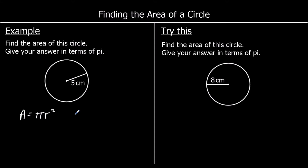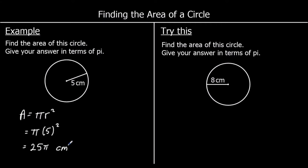In the first example, we've got a circle with a radius of 5 centimetres. So the area is going to be pi times 5 squared. 5 squared is 25, so it's pi times 25, which we can write as 25 pi. And since we measure area in squares, it's 25 pi centimetres squared.